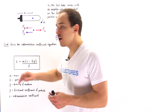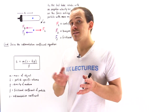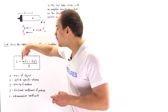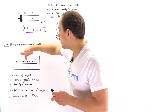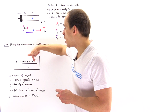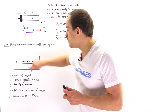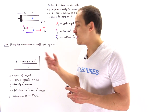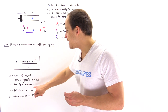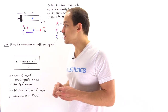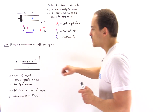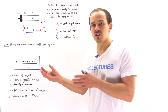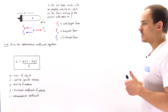The sedimentation coefficient of a particle inside a test tube rotating with some angular velocity is equal to m, the mass of that particle, multiplied by 1 minus v-bar multiplied by rho, where v-bar is the partial specific volume — the reciprocal of the density of that particle — and rho is the density of the fluid medium. We divide the product by f, the frictional coefficient of that particle with respect to the fluid.